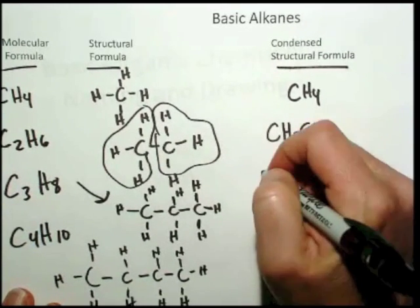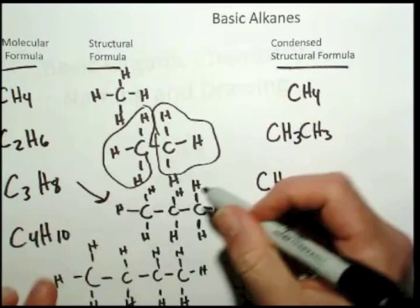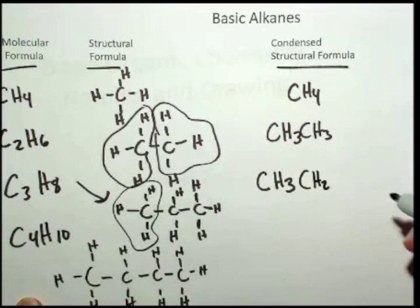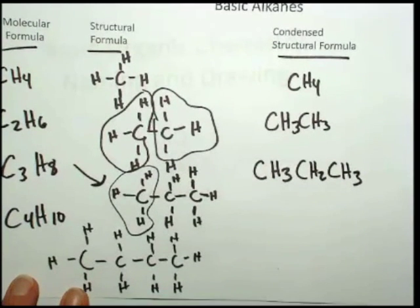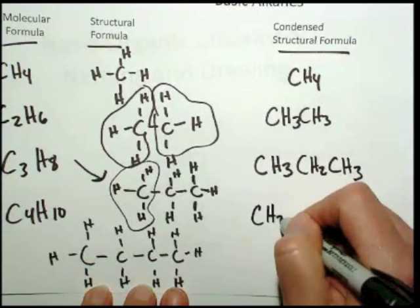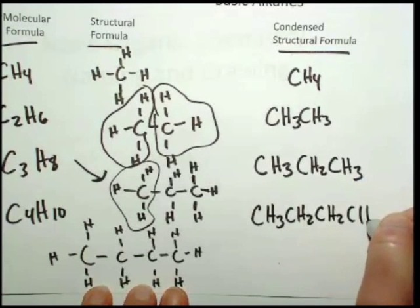For the condensed structural formula for propane, CH3, because the end carbon has three hydrogens, the middle one has two hydrogens, and then the last one has three hydrogens, would be written like that. And this is when you want to show what's connected to what. And then for butane, it's just CH3CH2CH2CH3.